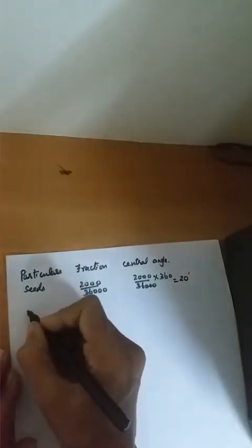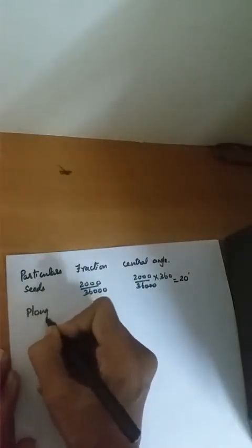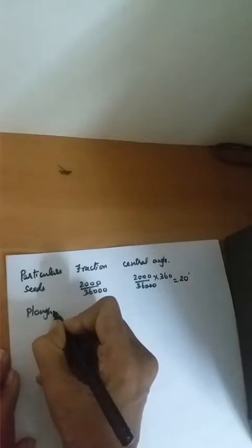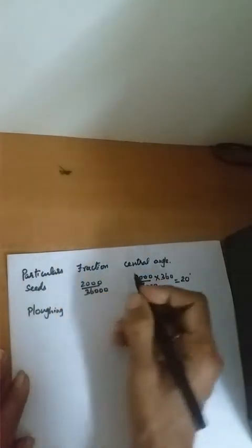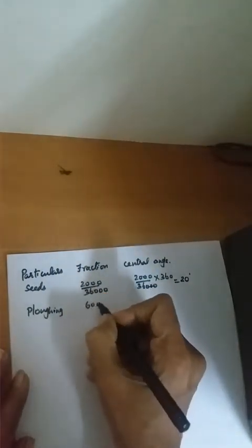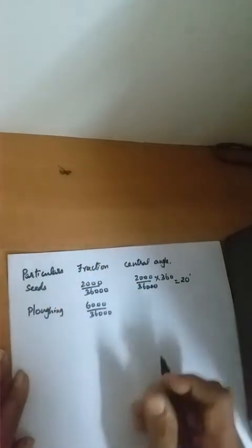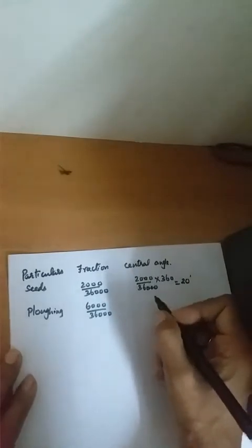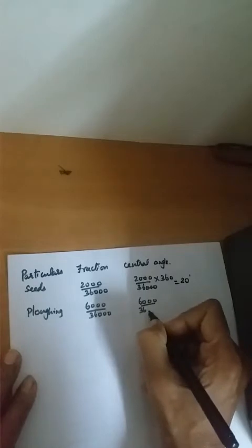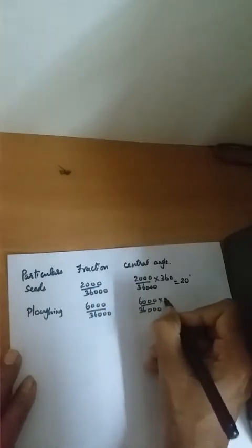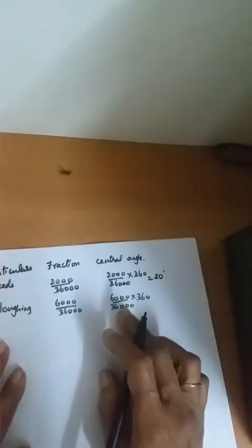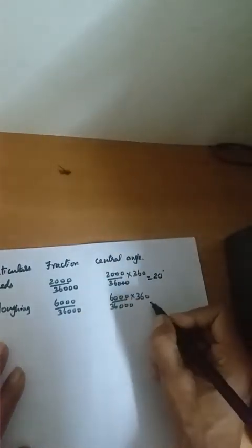The second category is 'Plowing'. Plowing is 6,000, so the fraction will be 6,000 divided by 36,000, and the central angle will be 6,000 divided by 36,000 into 360. Cancelling the zeros the same way, you will get 60 degrees — since 36 times 10 is 360.